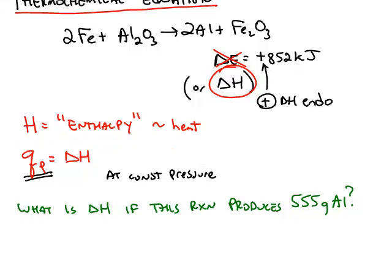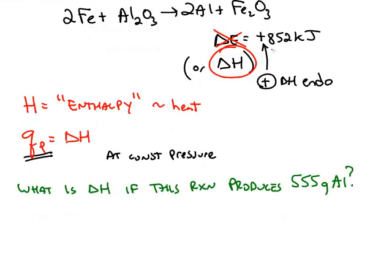We can also use this in a conversion factor, because this delta H, this number of kilojoules of heat is required for, if you're looking at the iron, this coefficient of 2 tells you it takes 2 moles of iron to react, and it requires this number of kilojoules of heat. If you were looking at the aluminum, it's 2 moles. If you're looking at any chemical, the mole in the coefficient is equal to the number of kilojoules from the balanced thermochemical equation.